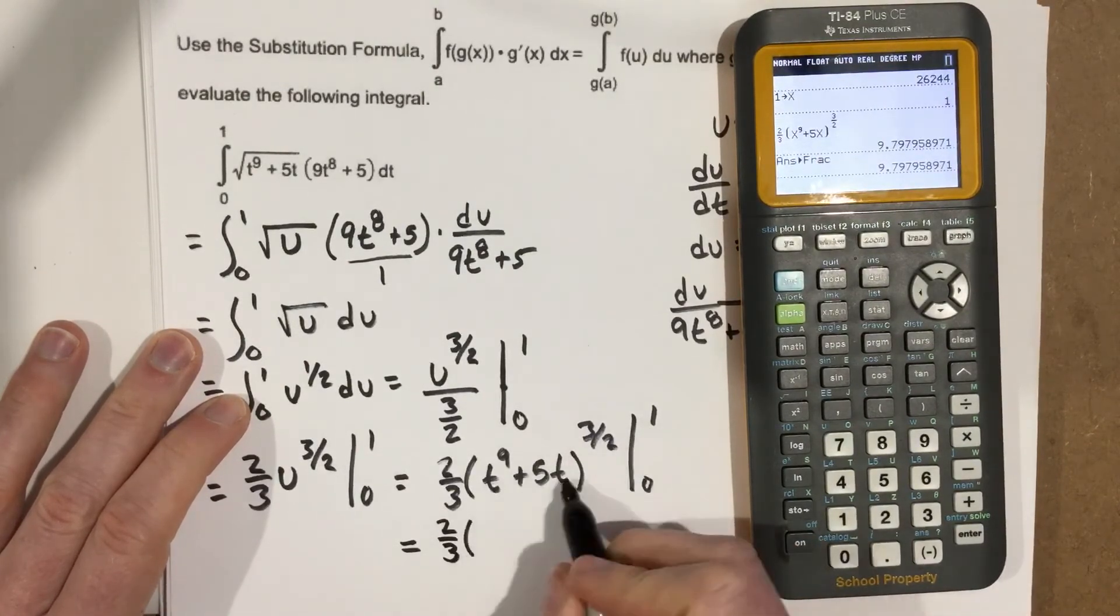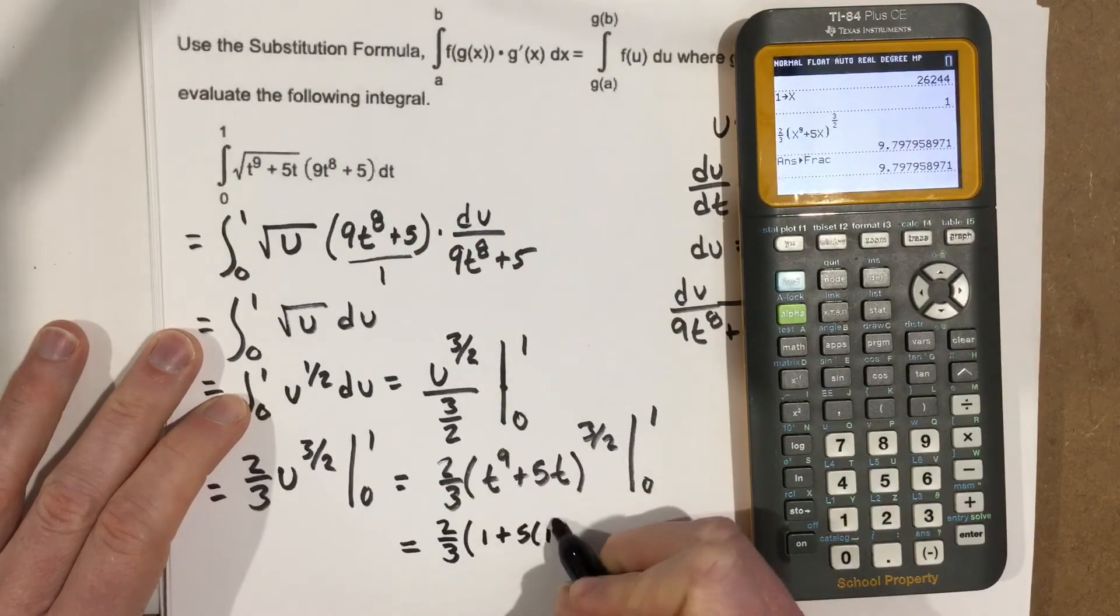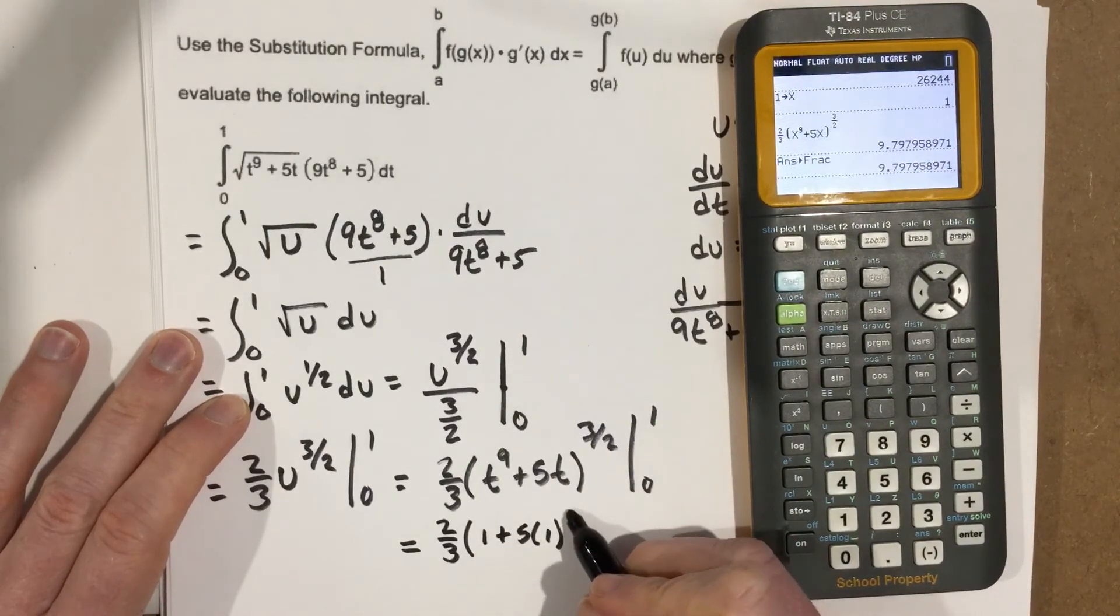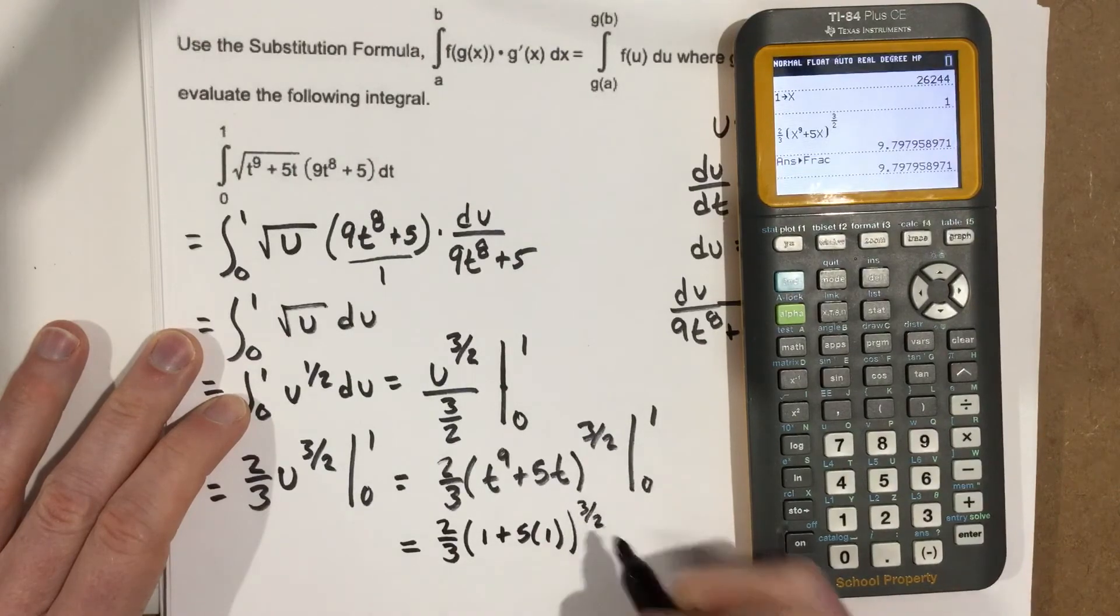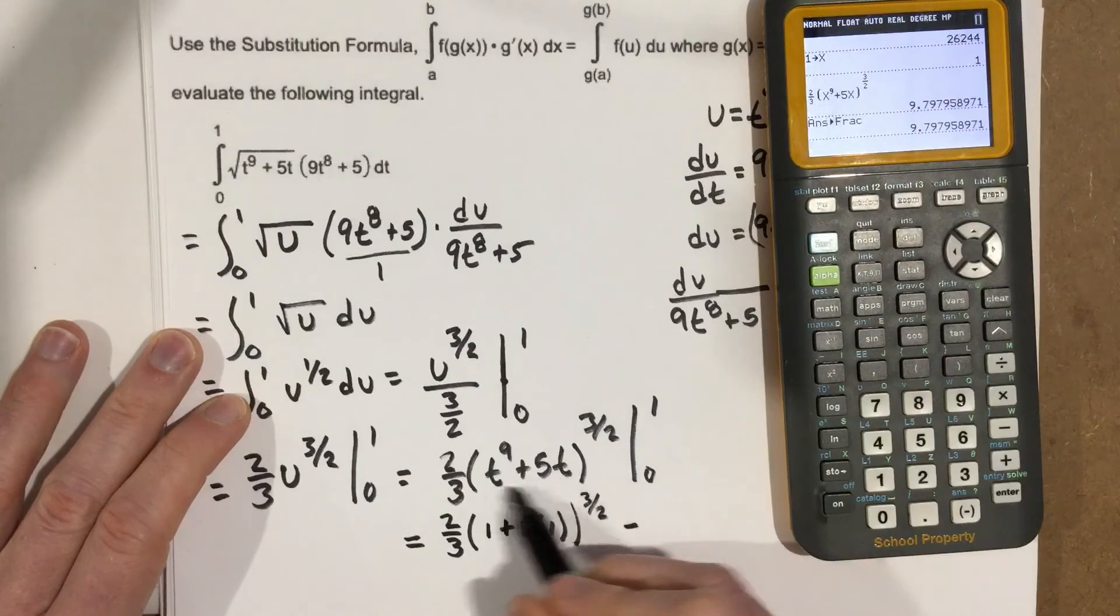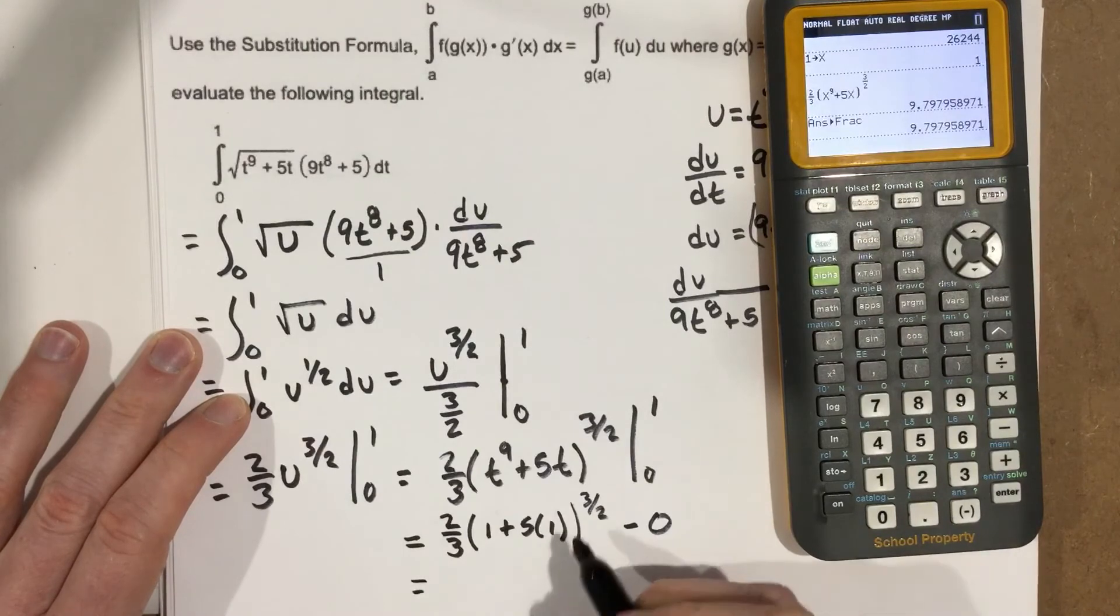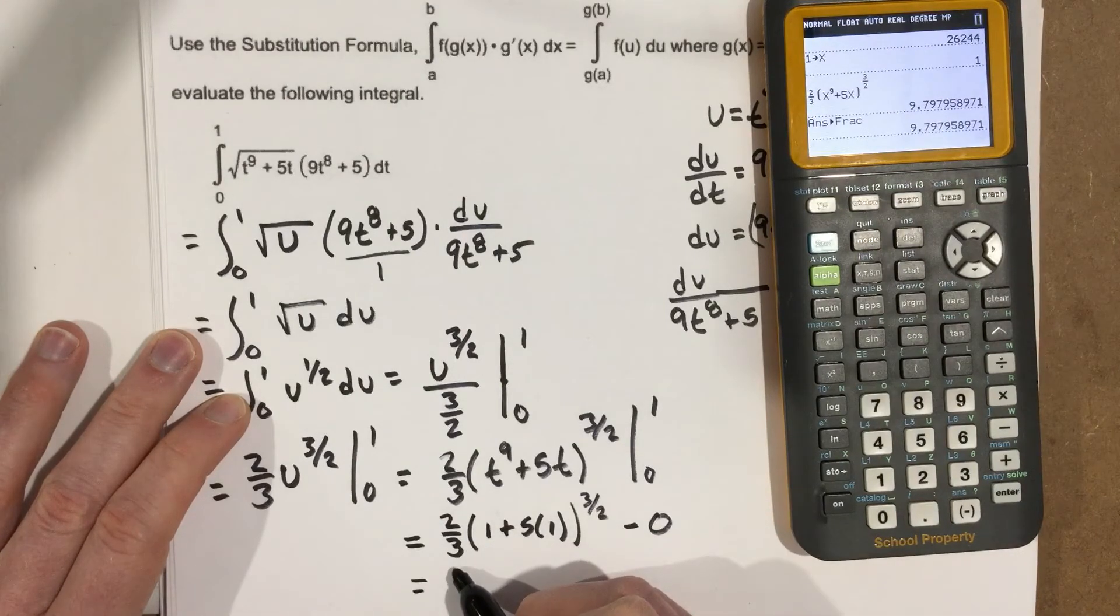This would be, when I plug in a 1, I end up with 1 plus 5 times 1 to the 3/2. And then minus, well, if I plug 0 in here, that's just 0.